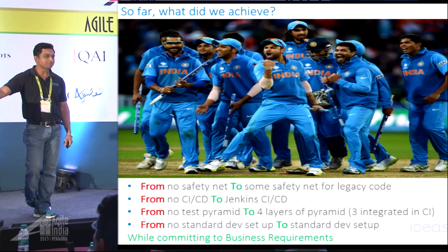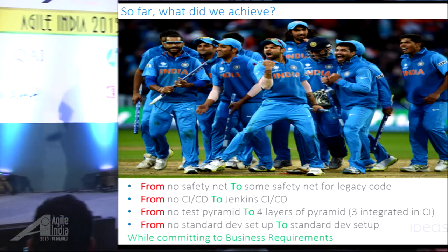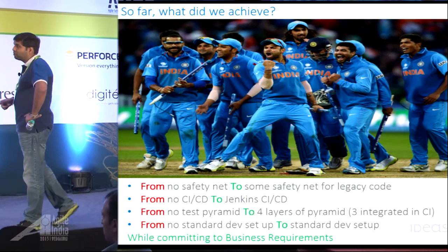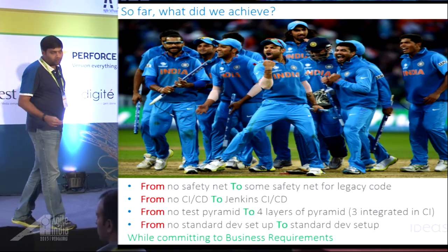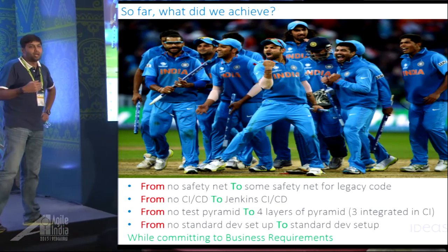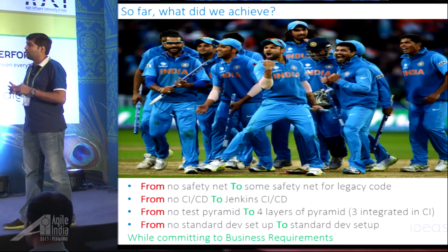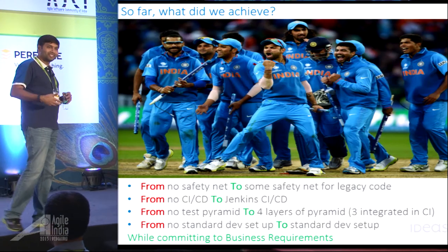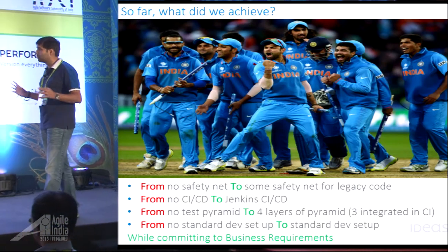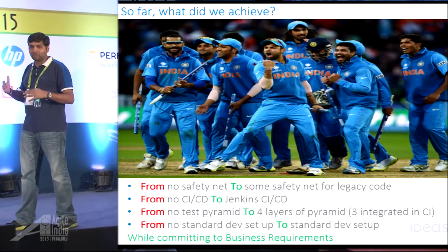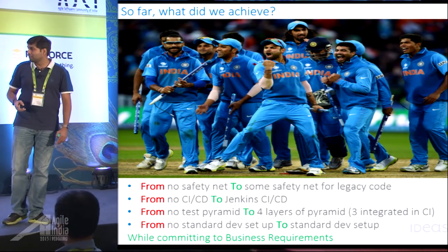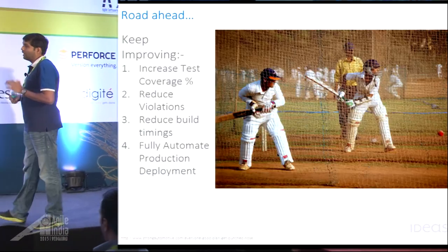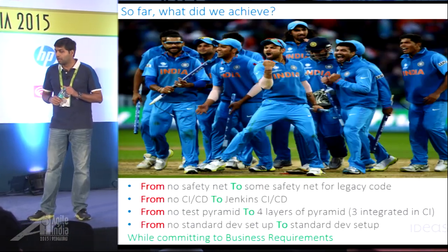So what did we achieve? We had a safety net built so people had confidence modifying existing code. We get fast feedback on every check-in via CI and Jenkins. We covered four layers of the test pyramid one step at a time — three are integrated into CI, one still in progress. We standardized the development environment so it's scalable and consistent — someone new can be up and running in a few hours rather than the few weeks it used to take. The most important thing is keeping the business happy throughout.